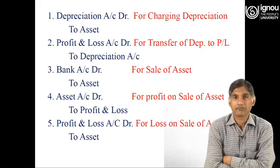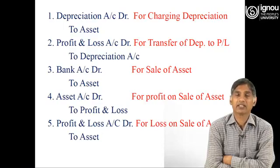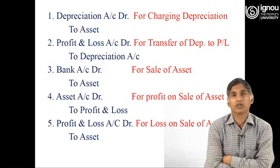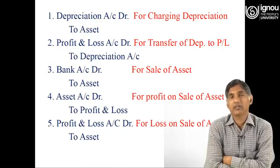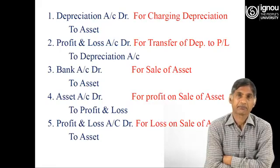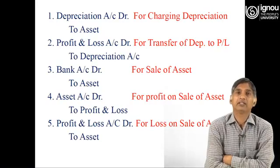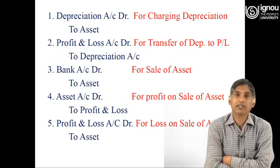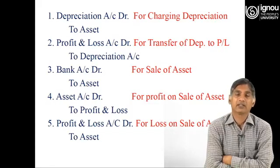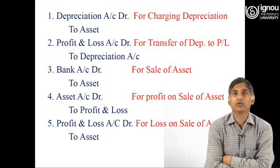The third journal entry is for sale of the asset. When the asset is sold, the journal entry is: Bank Account debit to Asset. When we make the sale of the asset we realize the amount, therefore the bank account will be debited. Since the asset is going out, as per the rule of the real account — debit what comes in and credit what goes out — the asset account will be credited.